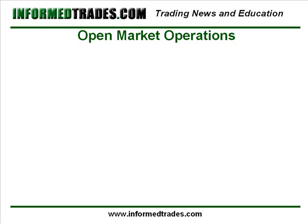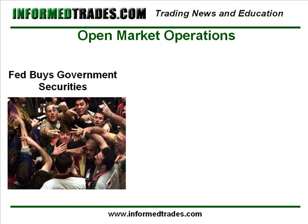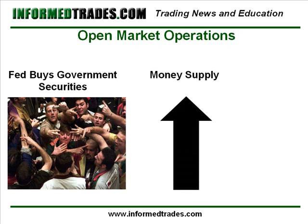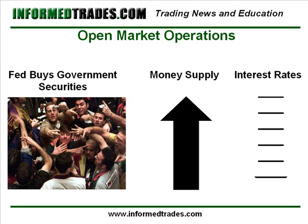Through something which is known as the open market committee, the Fed increases and decreases the supply of money by buying and selling US government securities. When the Fed wishes to reduce interest rates, they will increase the supply of money by buying government securities using money that was not available in circulation before they made their purchase. As with anything, when additional supply is added, everything else remaining constant, price normally falls. In this case, the price that we are referring to is the cost of borrowing money, or interest rates.